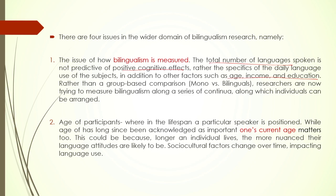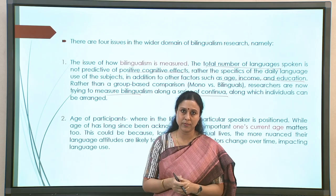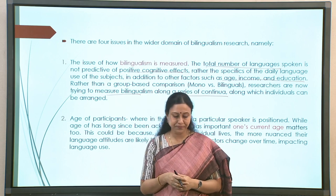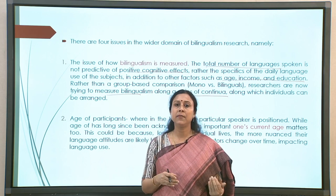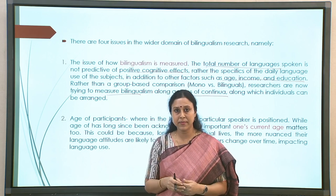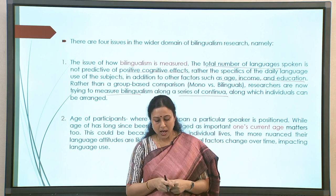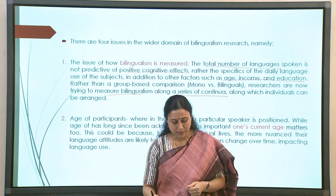The idea today is to measure bilingualism along a series of continua, not just some static factors like only proficiency or only age of acquisition. How age of acquisition and proficiency interact with each other is another domain that is of interest. It is not enough to say a person is a high-proficient bilingual or an early versus late bilingual — there are interactions even within those variables.